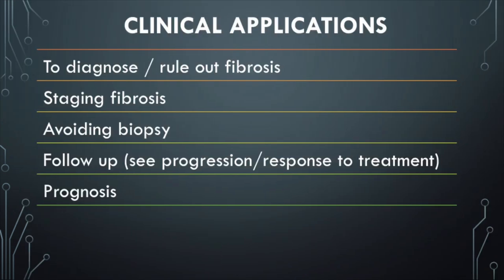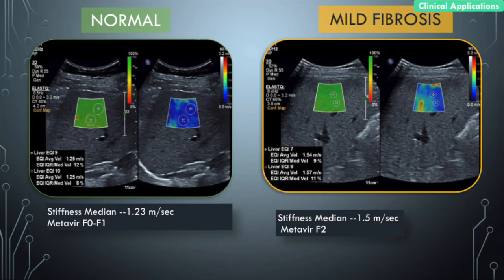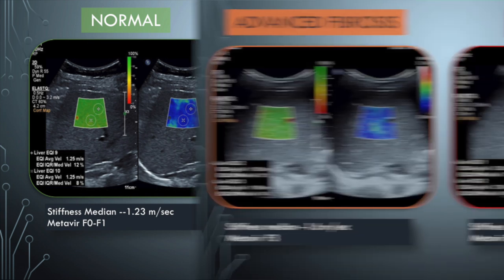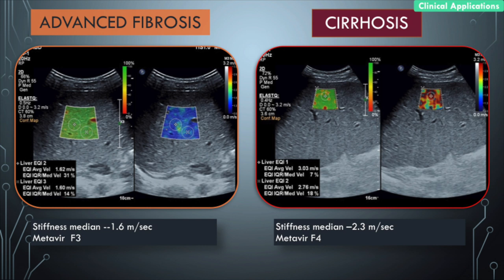Looking at clinical applications of elastography: yes, we can use it to diagnose and rule out fibrosis, and potentially to stage fibrosis, though there is some controversy there. We have been using it very effectively to avoid biopsies and to follow up patients to see how they respond to treatment. Examples: a patient with median stiffness of 1.2 m/s — normal; mild fibrosis around 1.5 m/s; advanced fibrosis around 1.6 m/s; and in cirrhosis, values going up to 2.3 m/s.